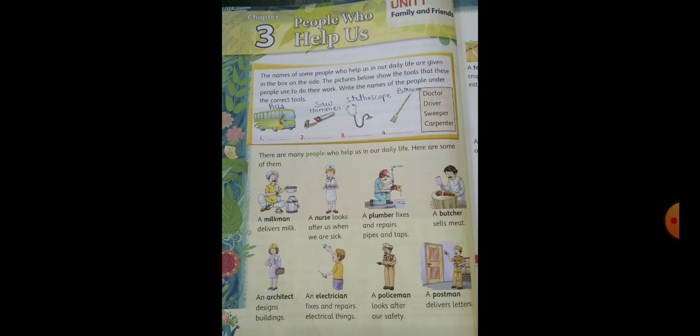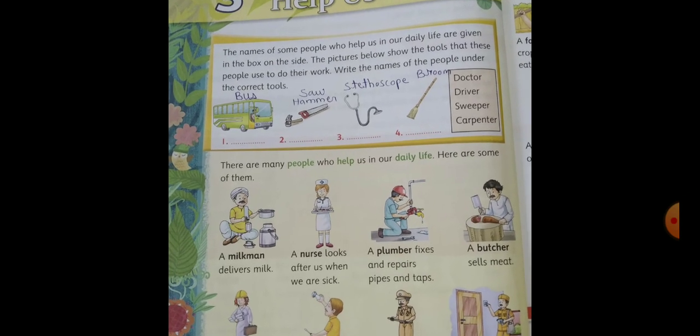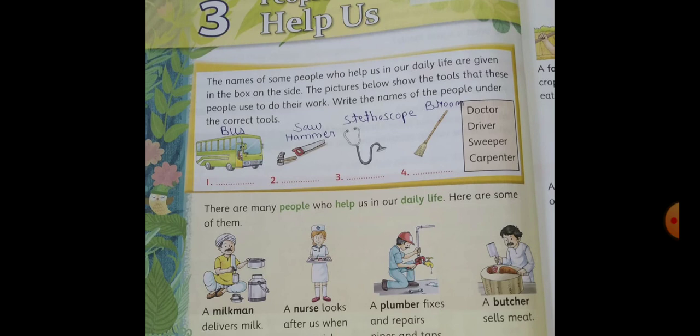Children, look at this picture. What can you see here? Here you can see there is a bus, then there is a saw and hammer, then there is an instrument called a stethoscope, and there is a broom. The names of people who help us in our daily life are given in a box on the side. You should match the pictures with the tools — the people who use these tools to do their work. Write the names of the people under the correct tools.